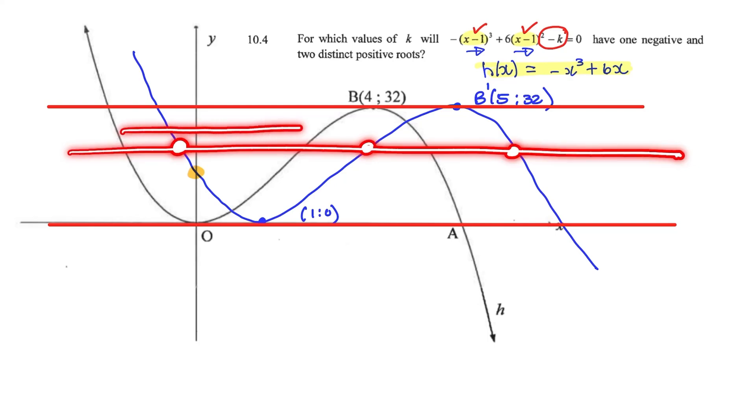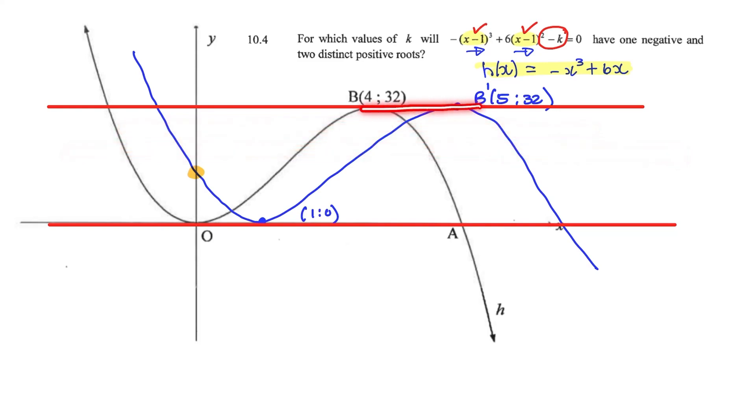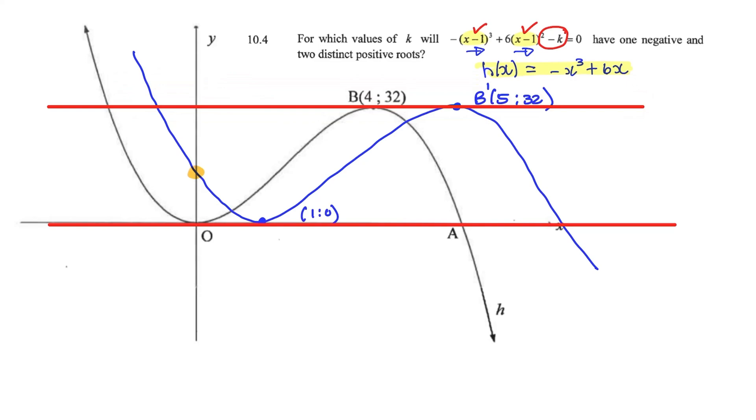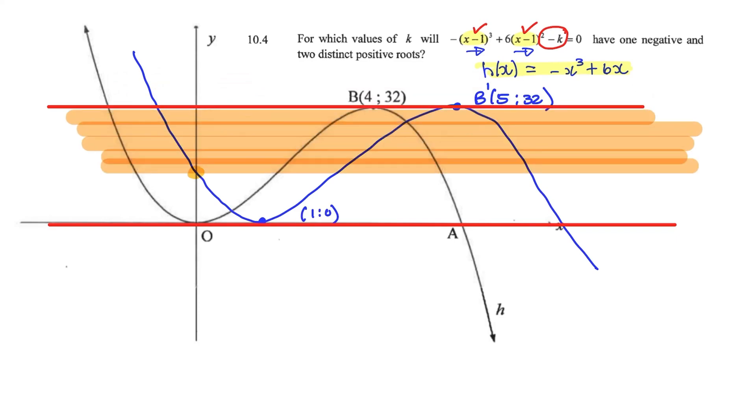And I'll continue to have one negative root and two positive roots as I move up until the turning point at B. After this turning point, there's only one negative root. So the values of k, which we need to move between, is in this section here. So in this highlighted section, we can see we will always have one negative root and two positive roots. So we already have a value for k at the top here, and that is 32.